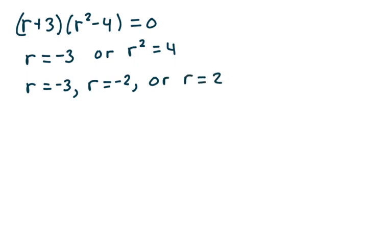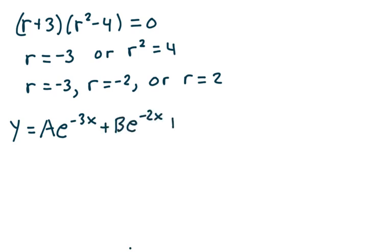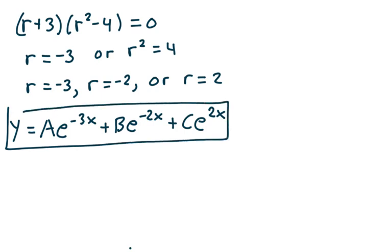This is a third-order differential equation, so we need three linearly independent solutions. My general solution will be y equals a e to the negative 3x plus b e to the negative 2x plus c e to the 2x. And that's how we do example 3.